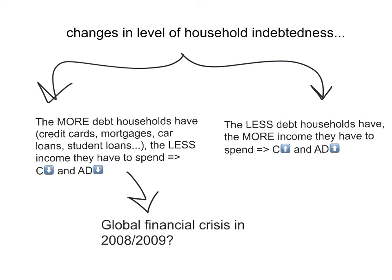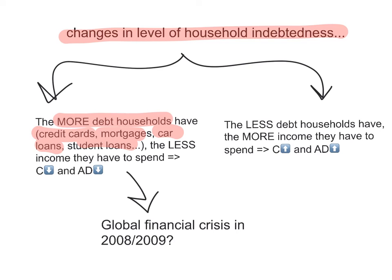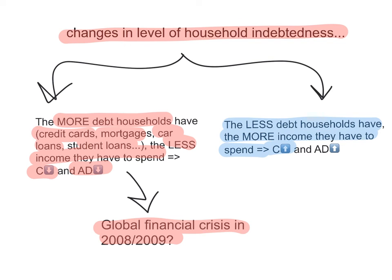The last factor is changes in the level of household indebtedness. The more debt households have — for example, credit card debt, mortgages, car loans, or student loans — the less income they have to spend. Therefore, consumption spending decreases and aggregate demand decreases, shifting the curve to the left. This is an example of what happened during the global financial crisis in 2008 and 2009, when household indebtedness rose dramatically and was essentially one of the factors that led to the sudden drop in economic activity and recession. Conversely, the less debt households have, the more income they have to spend, so consumption spending rises and aggregate demand increases, shifting the curve to the right.